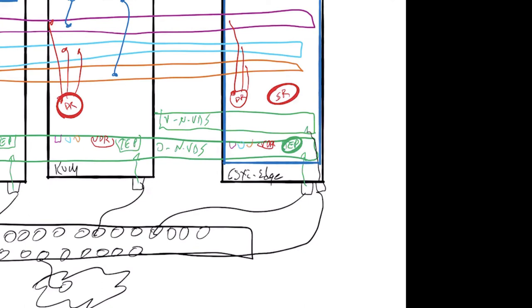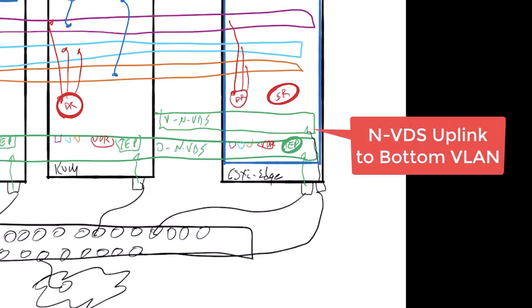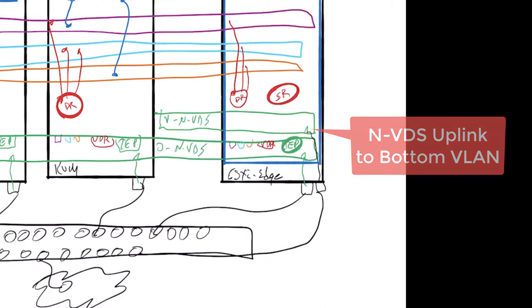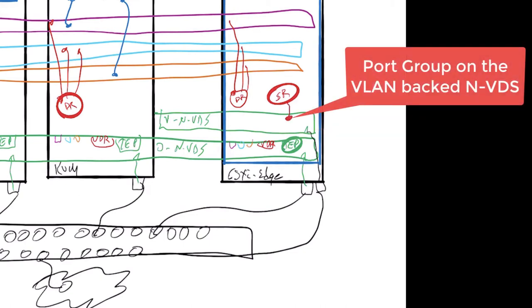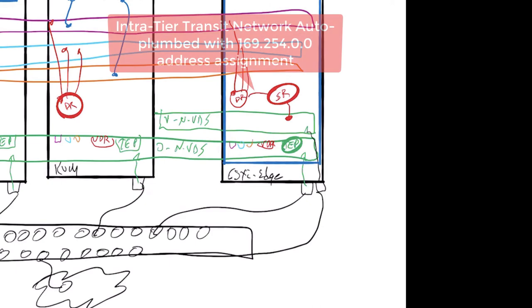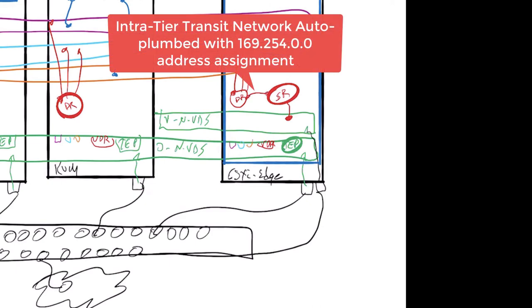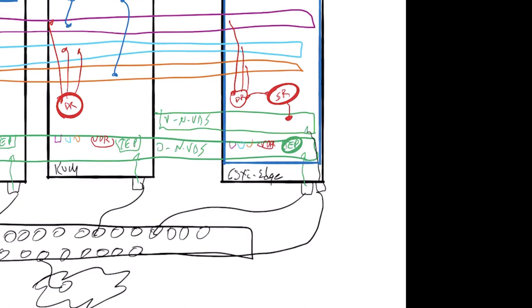Okay. The SR is going to be the uplink structure. The SR will exist on the with a connection to a port group on the VLAN backed and a connection, what they call an intra-tier transit connection to the DR. That will allow us to do north-south routing. And so if this is tier 0 router, he's got a tier 0 SR and a tier 0 DR.